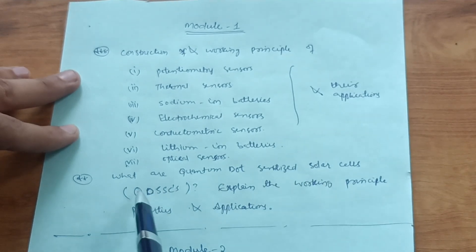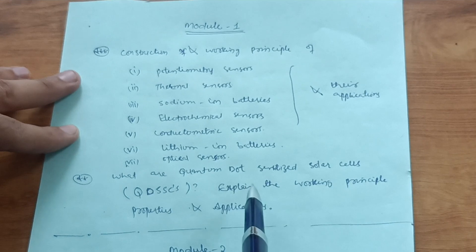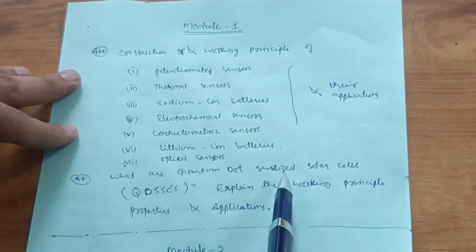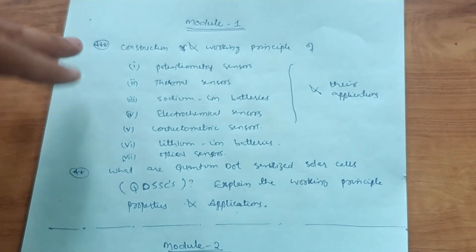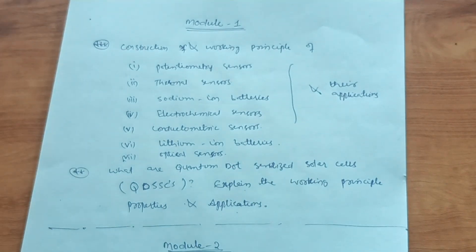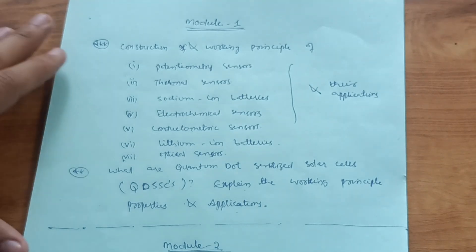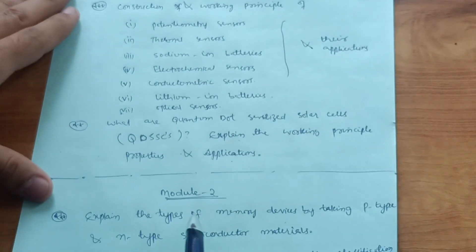Also from Module 1: what are quantum dot sensitized solar cells (QDSSC)? Explain the working principle, properties, and applications of quantum dot sensitized solar cells. This is sufficient content for Module 1 — sorting out these types of sensors and cells should help you cover at least 16 marks from this module.